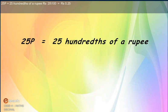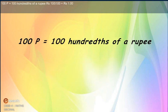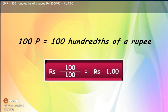25 paise equals 25 hundredths of a rupee, which means rupees 25 upon 100, or rupees 0.25. 100 paise equals 100 hundredths of a rupee, which means rupees 100 upon 100, or rupees 1.00. We already know that 100 paise is 1 rupee.